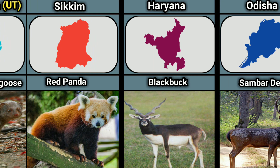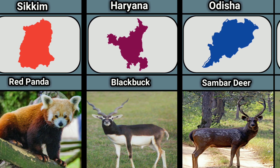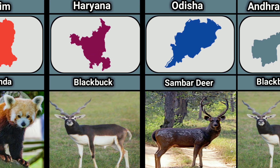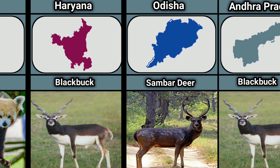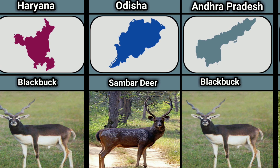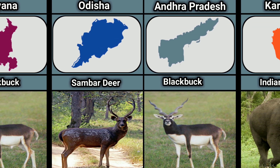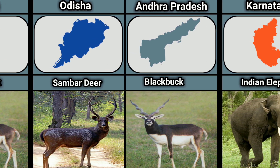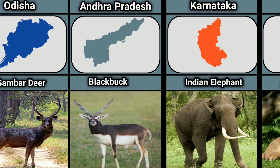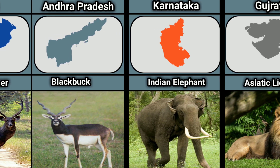Odisha — Sambar Deer. Andhra Pradesh — Blackbuck. Karnataka — Indian Elephant. Gujarat — Asiatic Lion.